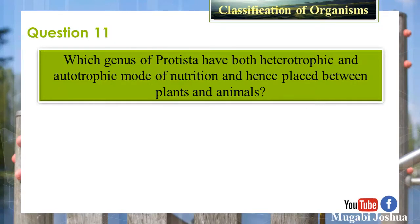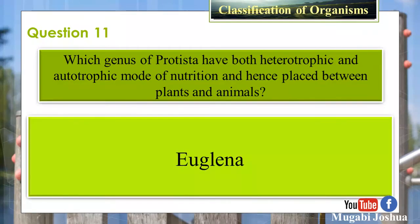Question 11: Which genus of Protista has both a heterotrophic and autotrophic mode of nutrition, and is hence placed between plants and animals? Answer: Euglena.